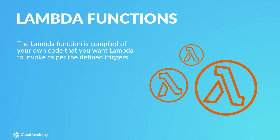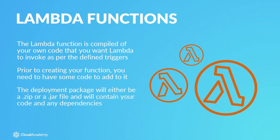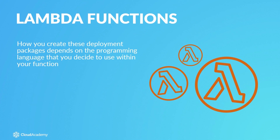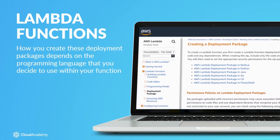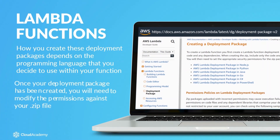How is a function created and how do I upload my code? Prior to creating your function, you need to have some code to add to it. Once you have successfully written your code, you are ready to import it into Lambda, and this is achieved by creating a deployment package. This deployment package will either be a zip or a jar file and will contain your code and any dependent libraries required. How you create these deployment packages depends on the programming language you decide to use within your function.